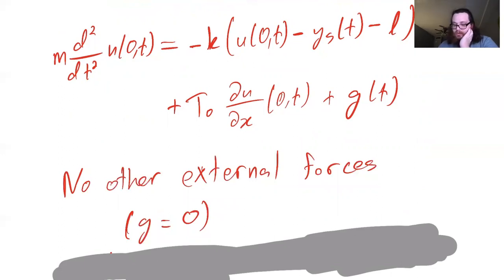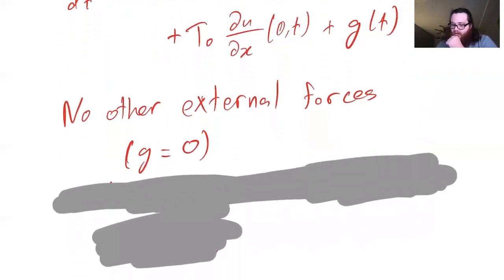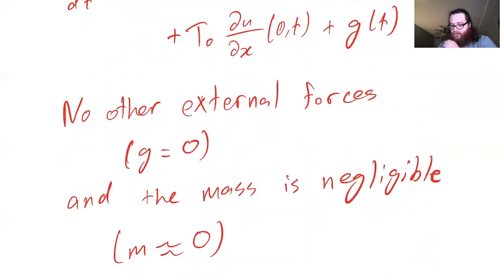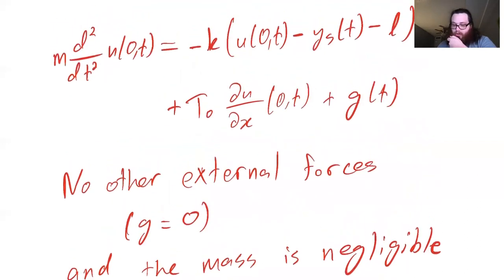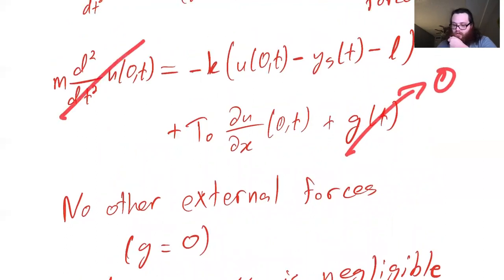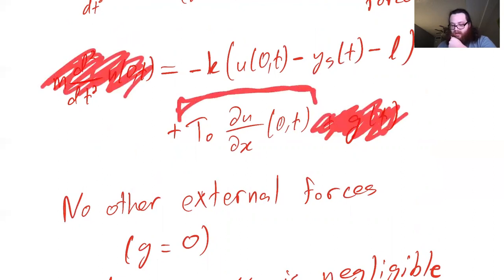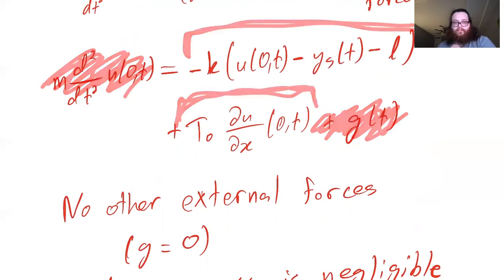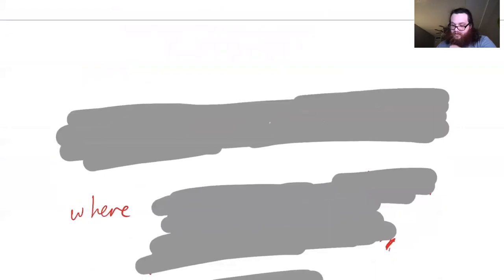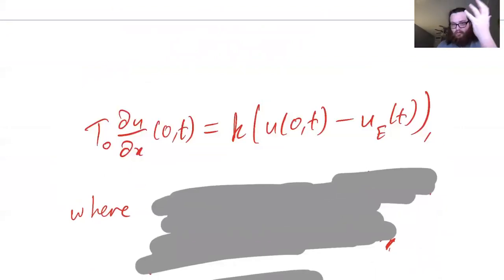If we assume no external forces — gravity or whatever else — and also assume the mass is negligible, approximately zero, then the mass-times-acceleration term is zero and the external forces term is zero. What remains is a boundary condition connecting the tension term with the spring term.